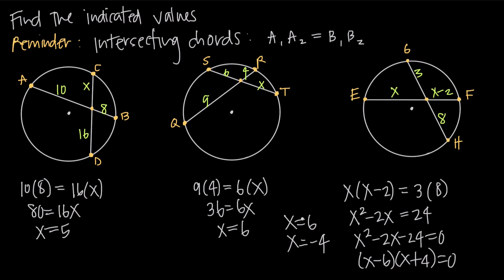And I can see right away that x equals 6 is going to be the correct solution because I can't possibly have a negative value. This distance here from E to the intersection point along chord EF, this distance is x. Well, I can't have a distance of negative 4. That's impossible. You can't identify a negative distance.